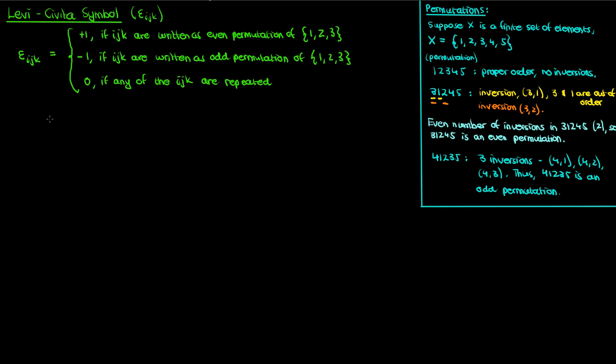You might find it a bit inconvenient to determine which arrangement of 1, 2, 3 is an even permutation or an odd one, so here's a diagram you can use to help yourself out. I'm going to draw the numbers 1, 2, and 3 in this triangle. If my ijk on the Levi-Civita symbol are arranged in a clockwise manner on this triangle, then it's an even permutation. If they're arranged in a counterclockwise manner, then it's an odd permutation.